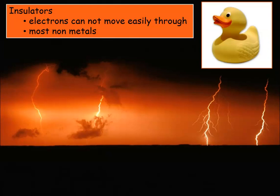The first term to talk about is insulators. Insulators are materials through which electrons cannot move easily. Most things that are not metals are really good insulators — for example, rubber, wood, and cotton. Not only do they keep you warm, but they also don't allow electricity to travel through them.